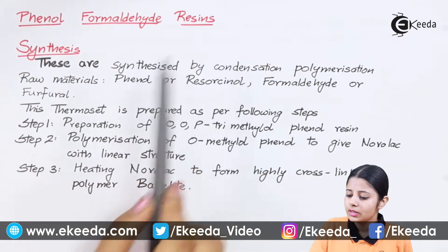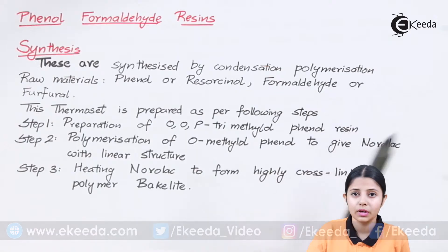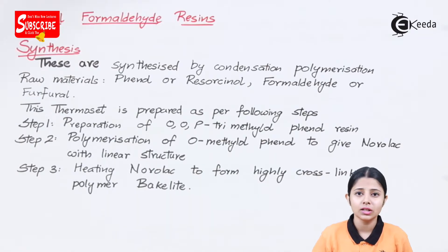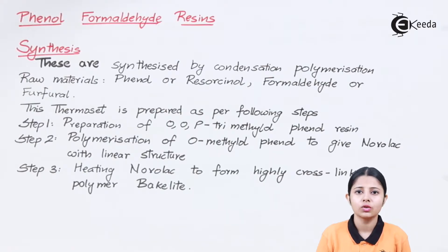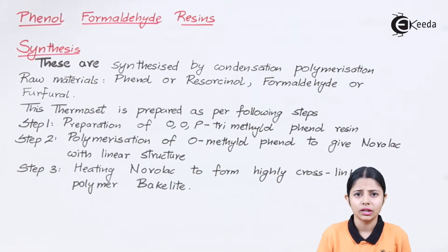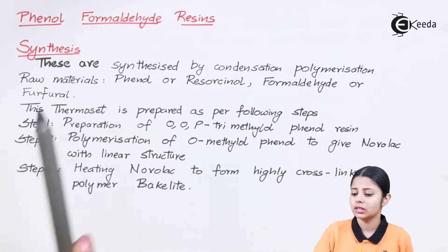Phenol formaldehyde resins are synthesized by condensation polymerization. Condensation polymerization is a kind of polymerization reaction that helps in making polymers. In condensation polymerization, the two reactants — called monomers — come together and condense. They club together by forming some kind of linkage, and when they form this linkage they remove some kind of byproduct. This process is known as condensation polymerization, through which this resin is formed.